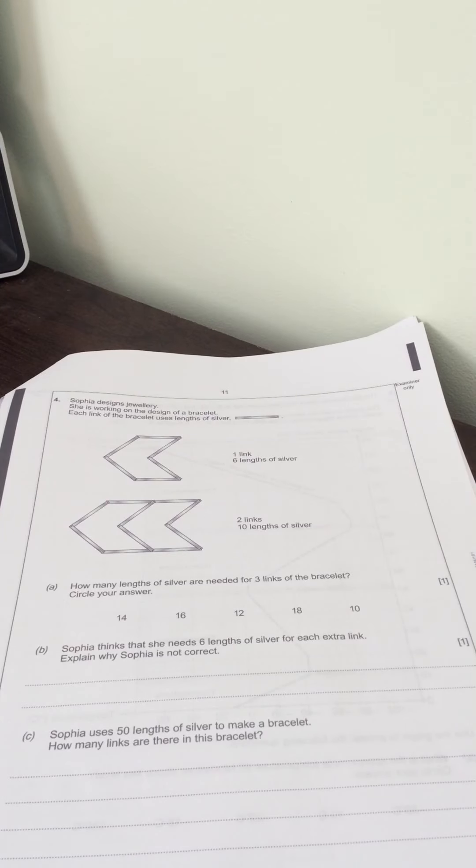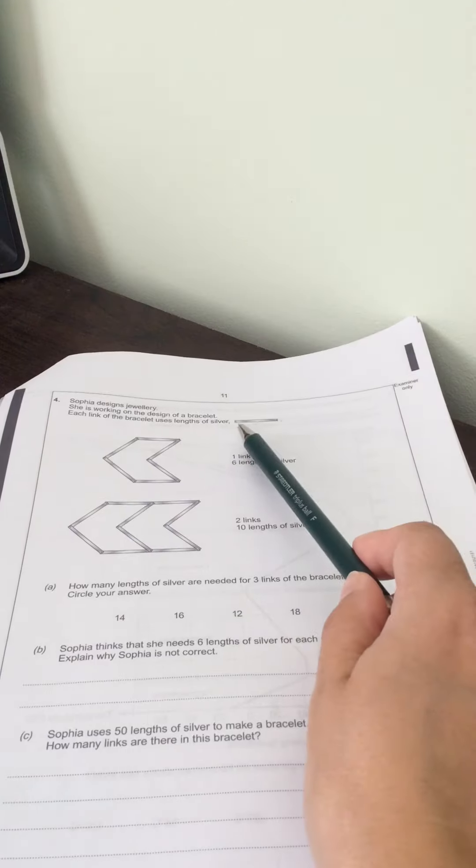Question four. Sophia designs jewellery and she's working on a design for a bracelet and each link on the bracelet uses a length of silver. So you can see the length of silver.